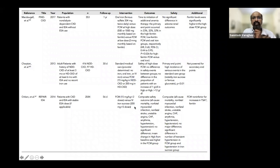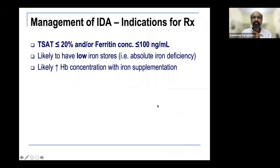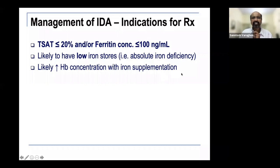Ferric carboxymaltose has the advantage of only two doses (15 mg/kg each) versus iron sucrose's ten doses of 100 mg or five doses of 200 mg. Most clinicians would say: if T-sat is less than 20% and/or ferritin is less than 100 ng/mL, the patient likely has absolute iron deficiency and will likely improve with iron supplementation.